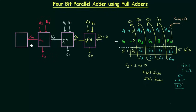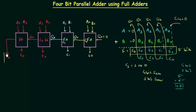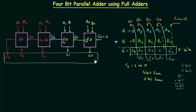C2 acts as input carry for the last full adder, which we use to add B3 and A3. The sum is S3 and the output carry for this last full adder is C3. By including C3 along with the sums obtained from all the full adders, we get the final sum. This is how you implement a 4-bit parallel adder using 4 full adders.